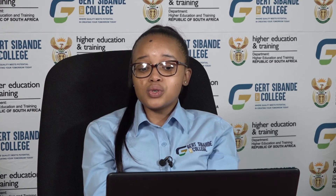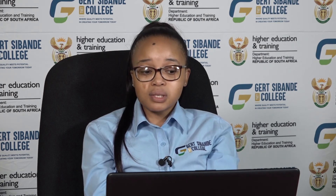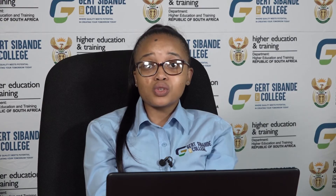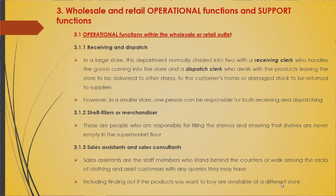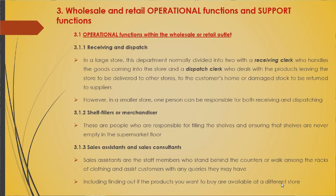The dispatch clerk handles products leaving the store to be delivered to customers' homes, to other stores, or damaged stock returned to the supplier. However, in a small store, one person can be responsible for both receiving and dispatching. The second operational function is shelf fillers or merchandisers — people responsible for filling the shelves and ensuring shelves are never empty during the flow of business.